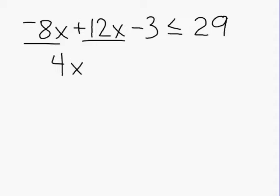So we are going to simplify this inequality to 4x minus 3 is less than or equal to 29. Now that we have simplified all parts that are possible, we are going to isolate our x variable to figure out what the inequality is.